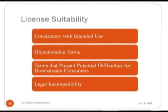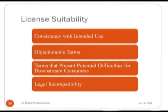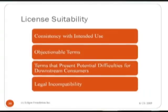We also look for licenses that have terms causing difficulties for our downstream consumers. The best example today is the LGPL, or Lesser GNU Public License. We don't allow redistribution of code from Eclipse projects under that license because of provisions related to reverse engineering, and concerns by some of our significant members that it will cause them difficulty in managing their licensing obligations downstream. Finally, we look at legal incompatibility — whether there's an incompatibility with other licenses at Eclipse that would prohibit us from using that material.